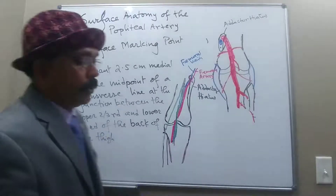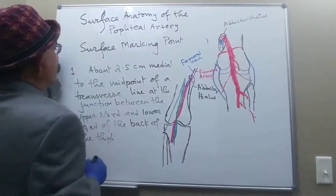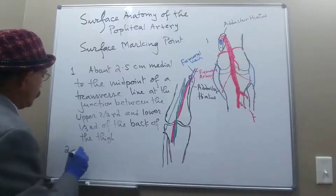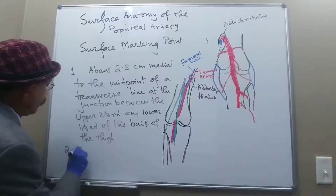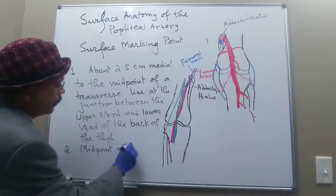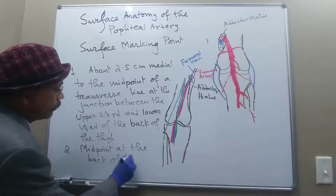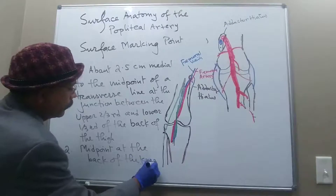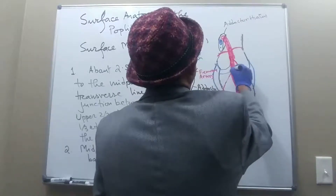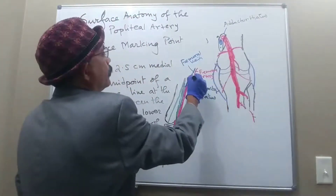We got one point there. The second surface marking point is the midpoint at the back of the knee. So this is one point here.